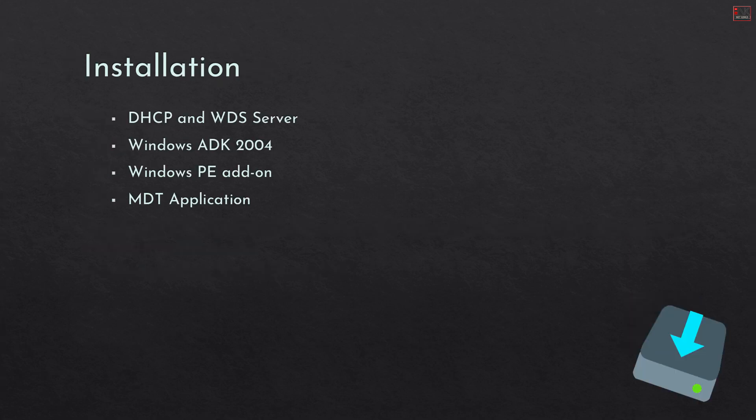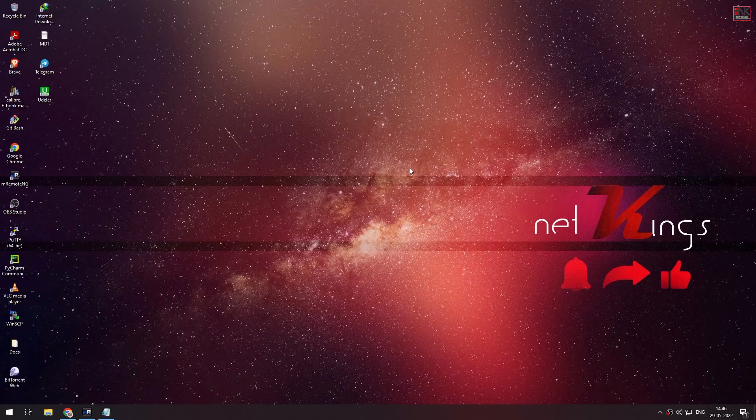This is the DHCP and WDS. Then we can see the Windows ADK 2004. This is for Windows 10 and Windows 11. This is the Windows PE Add-on. This is the Windows Pre-Execution Add-on. MDT is the GUI tool.